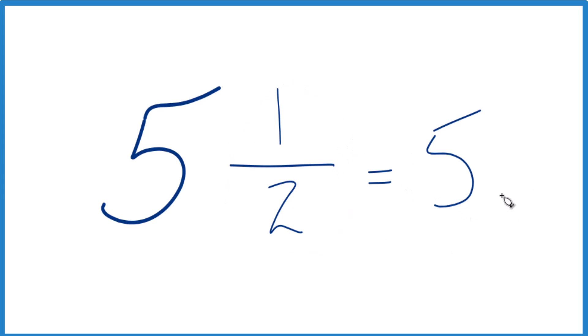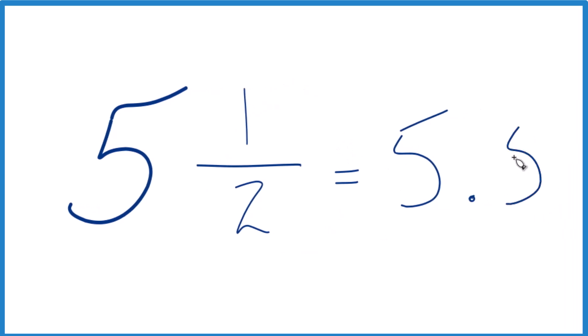You might know that one-half is .5. If you do, you're done. Five and one-half equals 5.5. So this is the fraction. This is the decimal.